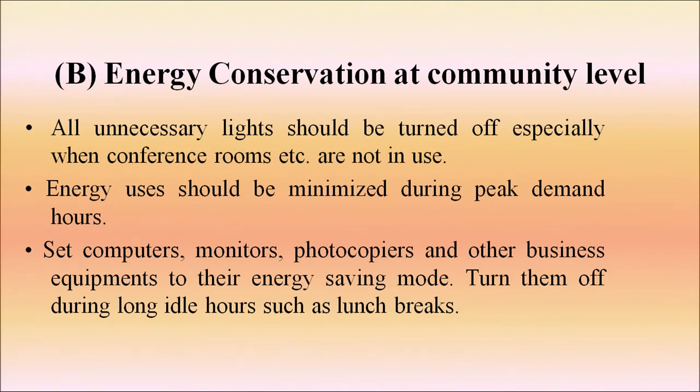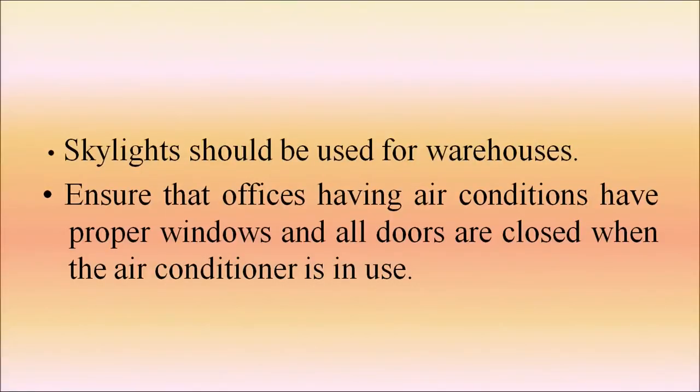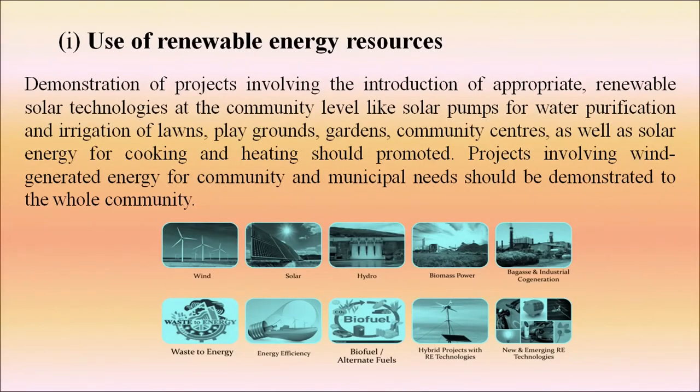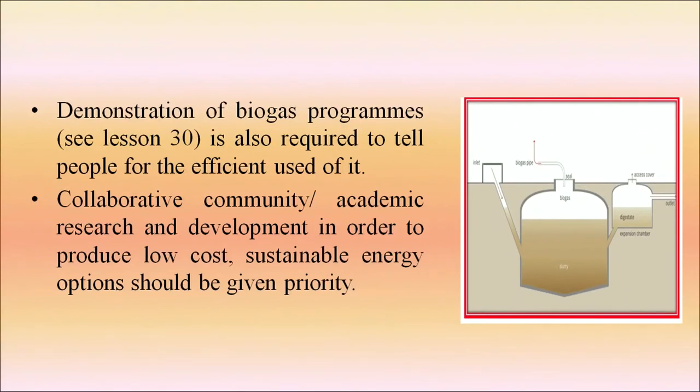Turn equipment off during long idle hours such as lunch breaks. Use skylights for warehouses. Ensure that offices with air conditioning have proper windows and all doors are closed when the air conditioner is in use. Alternative renewable energy resources should be used in place of non-renewable ones. Energy audits of homes, buildings, hotels, and factories should be done at regular intervals. Demonstrate projects involving renewable solar technologies at the community level — such as solar pumps for water purification and irrigation of lawns, playgrounds, gardens, and community centers — as well as solar energy for cooking and heating. Projects involving wind-generated energy for community and municipal needs should also be demonstrated.